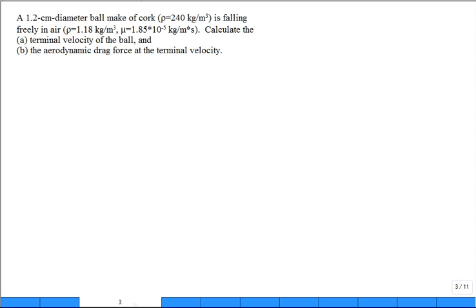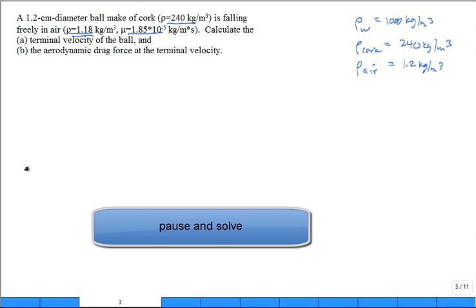A 1.2 centimeter diameter ball is made up of cork. Cork has a density of 240 kilograms per cubic meter. What's the density of water? About a thousand kilograms per cubic meter. What's the density of air? It's around 1.2 kilograms per cubic meter. The density of cork is in between so it will float in water but it sure will drop in air. Now it's falling freely in air. Calculate the terminal velocity of the ball and then the aerodynamic drag force at the terminal velocity.